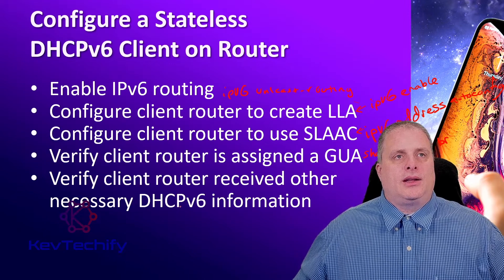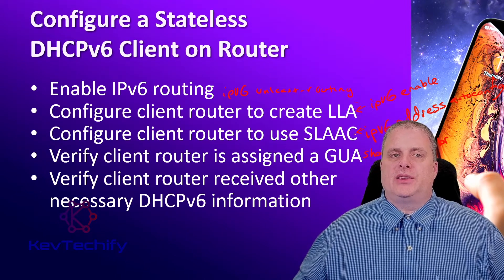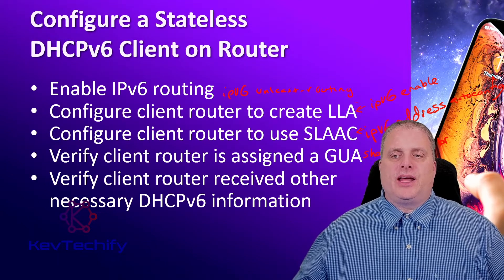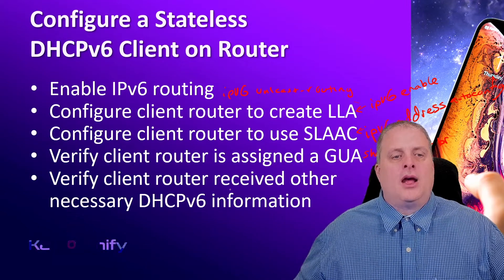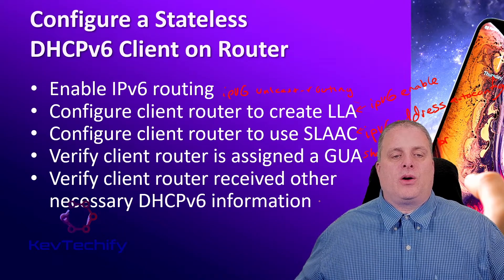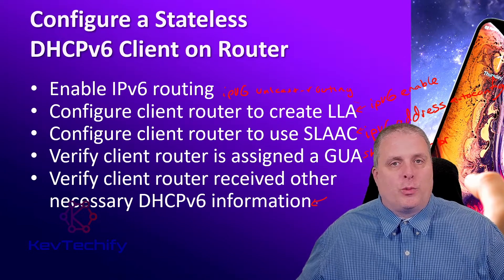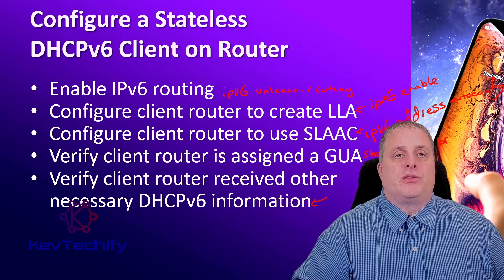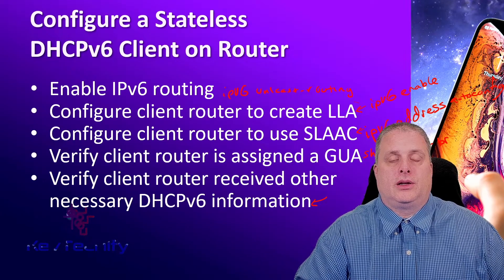Because we're using a stateless DHCP server, we're going to use SLAAC to generate that IPv6 address — the last 64 bits of the identifier. But then we're going to verify that all the other DHCP information is there: your name server, your domain name. Those are the steps you need to configure a stateless DHCP version 6 client and router.